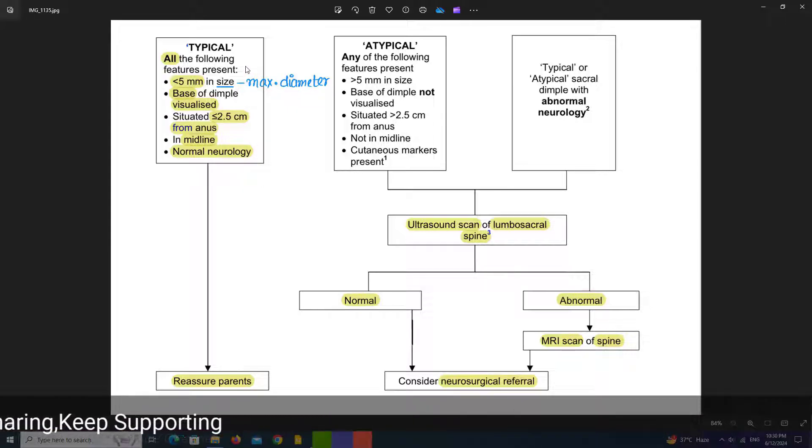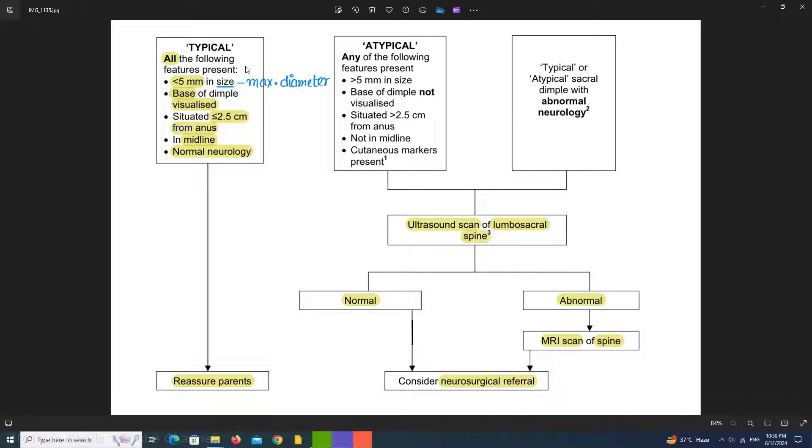Let's have a look at features which we have to see in a child. If the maximum diameter of dimple is less than 5 mm, if base of dimple is visualized, if it is situated less or equal to 2.5 cm from anus, and if it is situated in midline, and if neurology of the baby or child is normal...